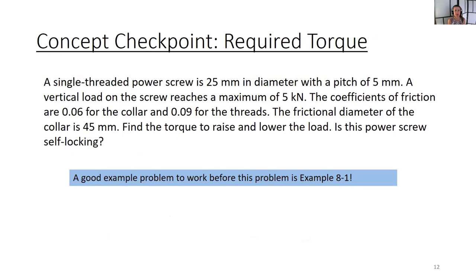Let's put this all together with a concept check. This is a very straightforward problem, but I promise they will get more interesting on your homework. Here we have a single threaded power screw that is 25 millimeters in diameter with a pitch of five millimeters. A vertical load on the screw reaches a maximum of five kilonewtons. The coefficients of friction are 0.06 for the collar and 0.09 for the threads. The frictional diameter of the collar is 45 millimeters. Find the torque to raise and lower the load. Is this power screw self-locking? A good example problem to work before this is example eight one.